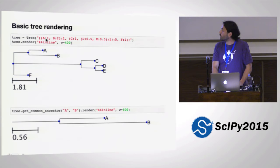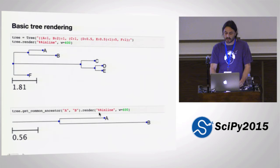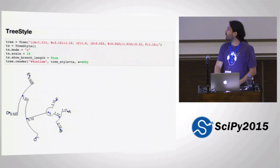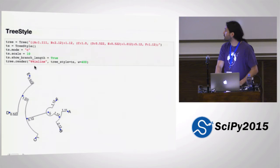Rendering a tree is as simple as this: you load a tree, you call the tree render function. In this case I'm using the inline argument because it allows for integration with IPython notebooks. What you get is a tree image — just two lines and you get an image representing your tree and your nodes. Everything in a tree is a tree object, so you can even get a pointer to an internal node and call the render function. What you get is a partial image of that subtree. We can complicate things a bit more by using tree style, the first layer of customization. Here I'm just changing the mode to 'C' for circular, and changing the branch scale and setting show branch length to true.